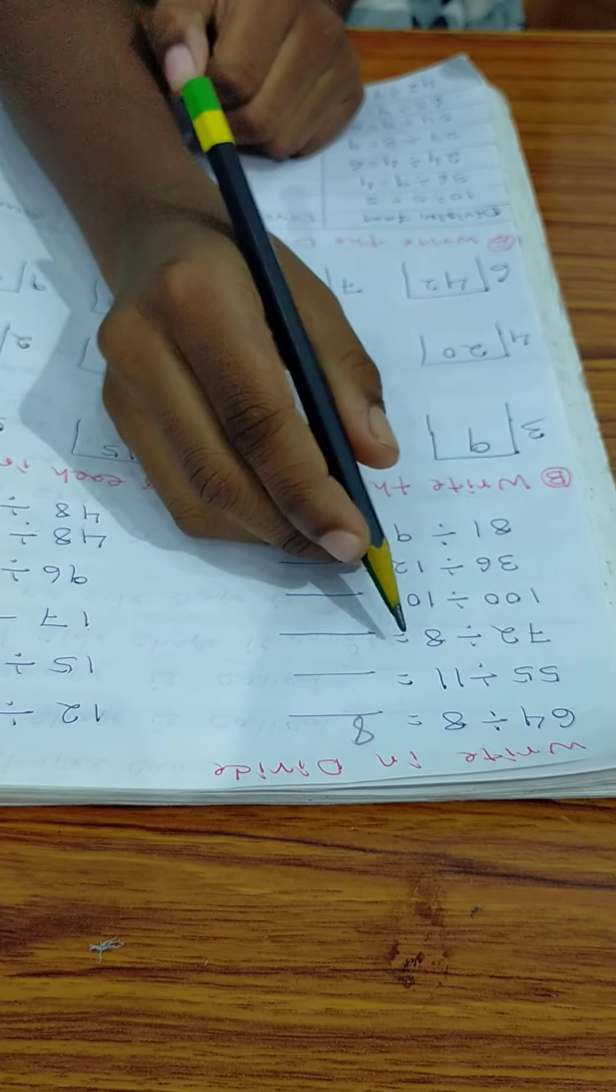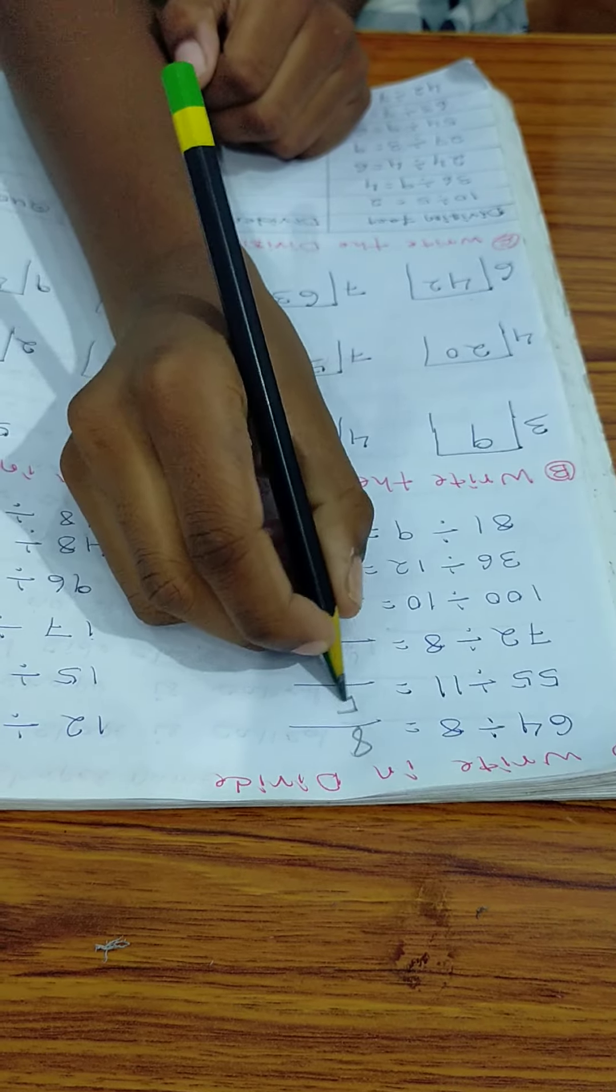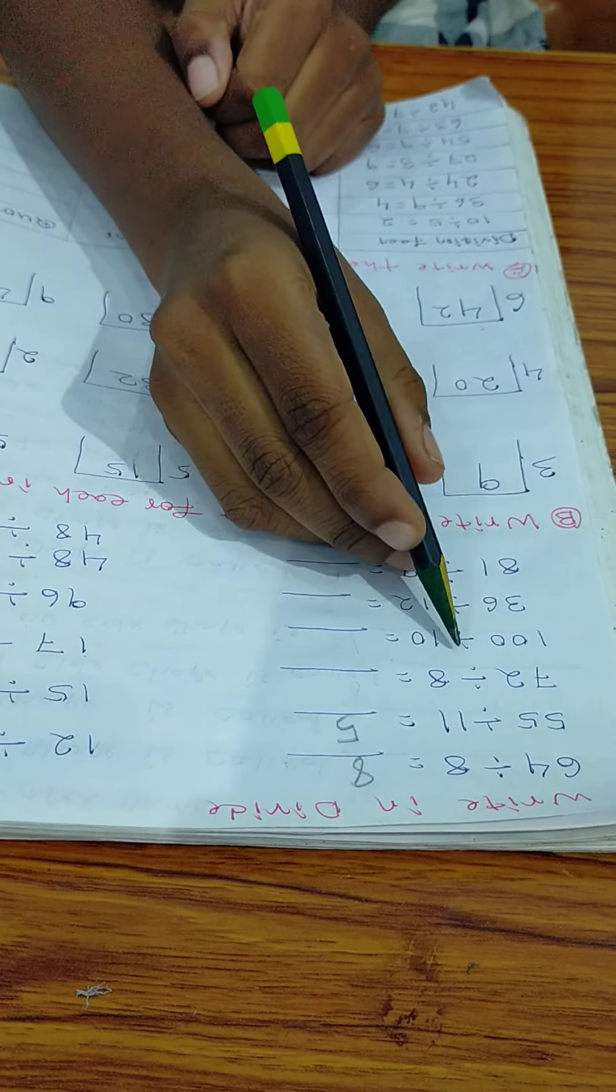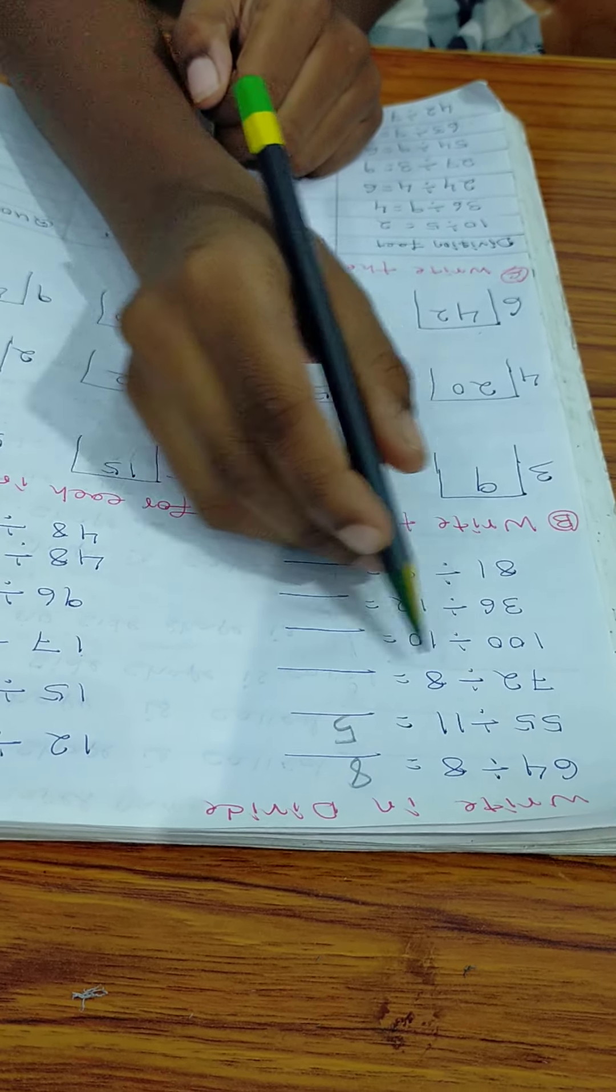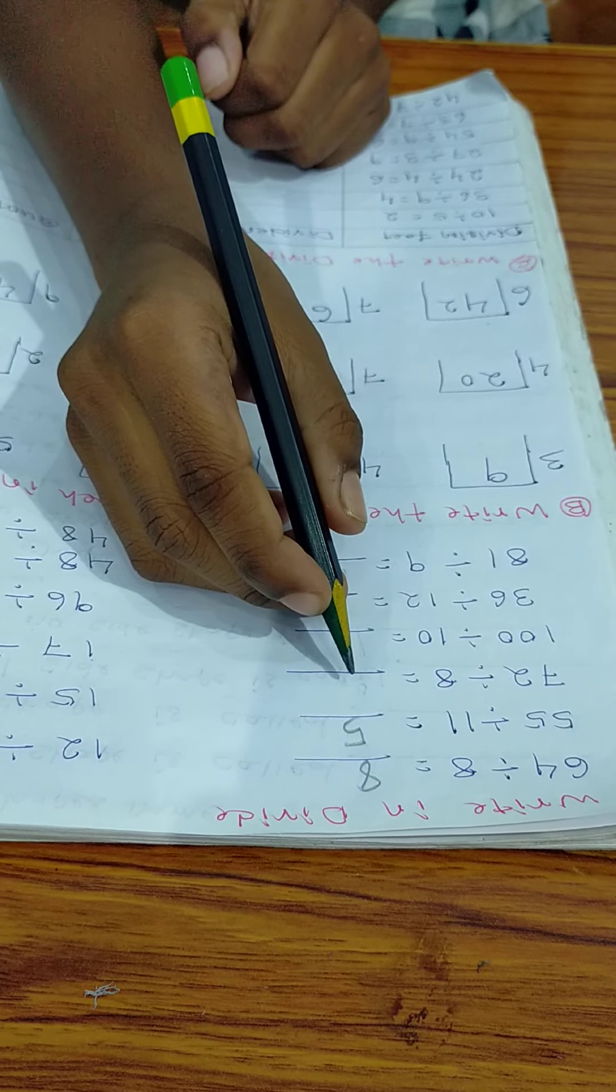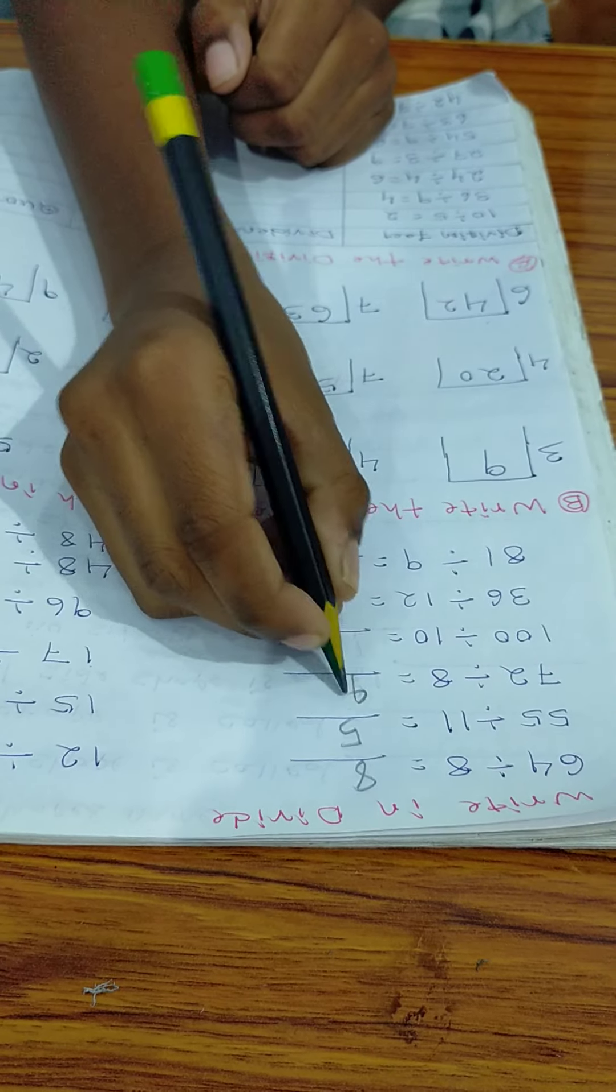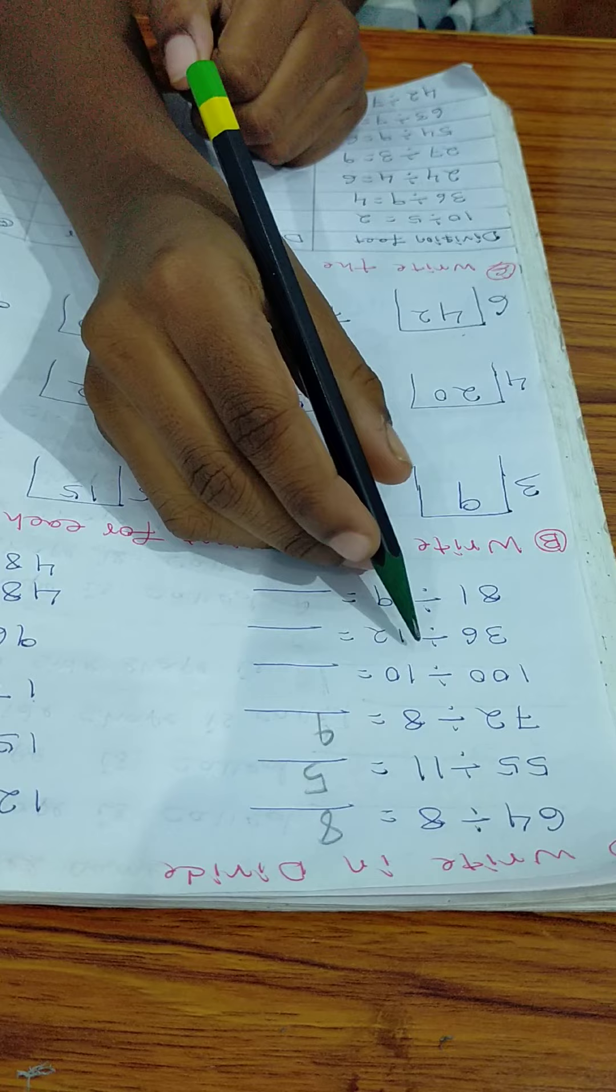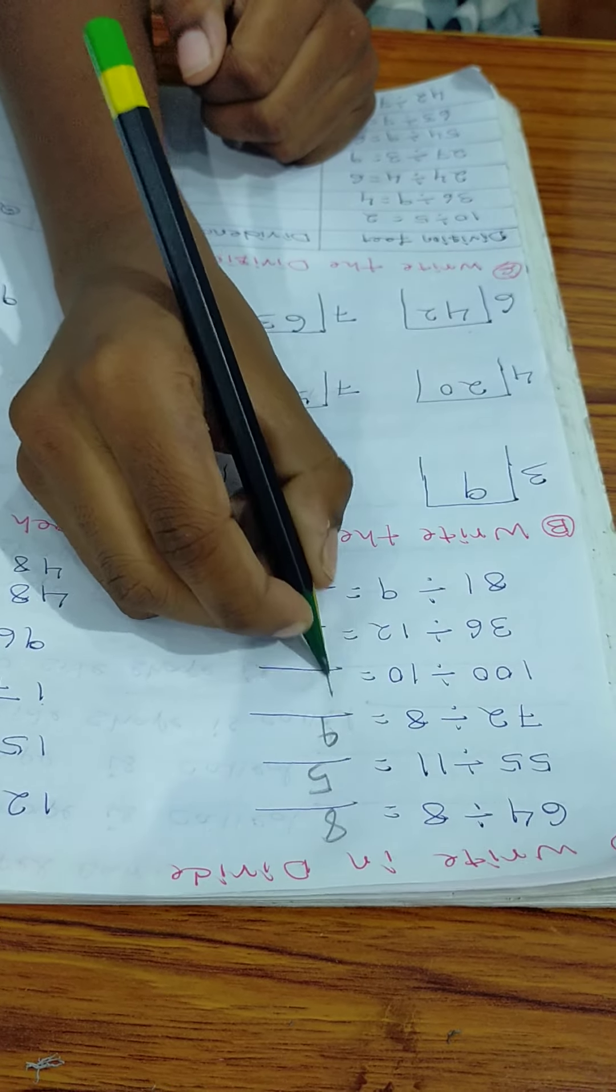64 divide 8 is equal 8. 55 divide 11 is equal 5. 72 divide 8 is equal 9.